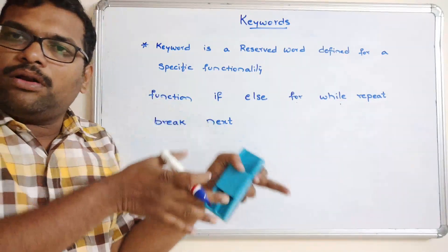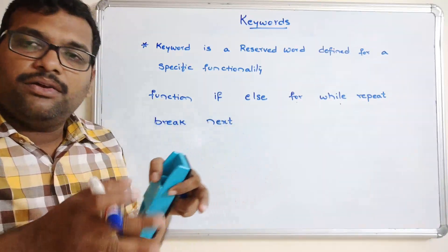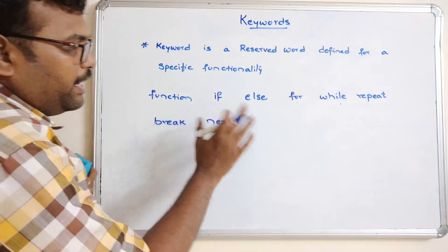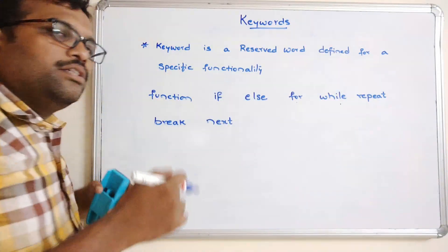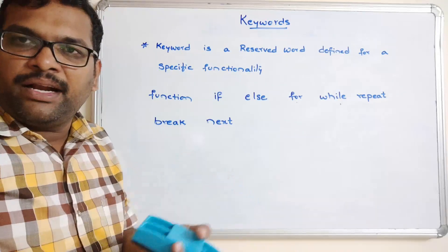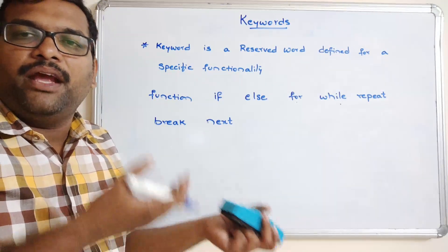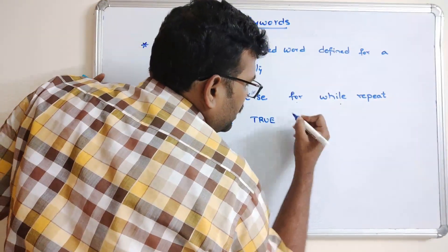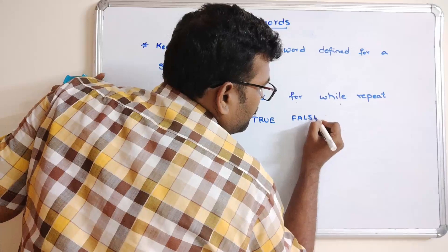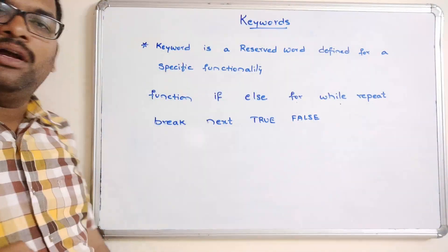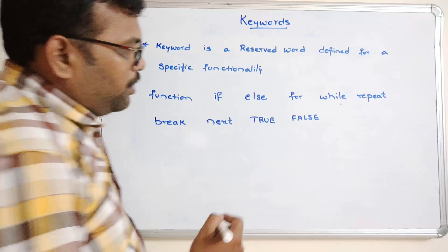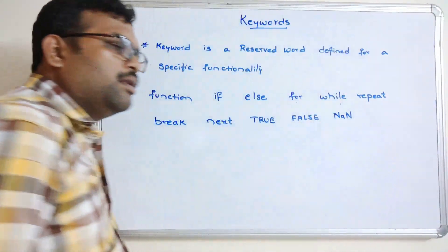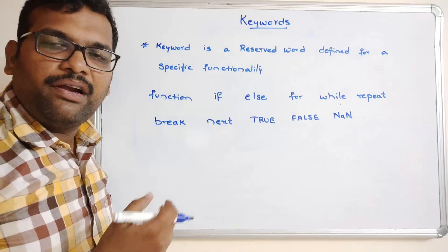There are two more keywords: 'TRUE' and 'FALSE', which we call boolean objects. If you are writing any condition using 'if' or 'else', the condition result will be a boolean result — either TRUE or FALSE. We also have 'NaN', which stands for Not a Number. If a value is not a number, it will return NaN.